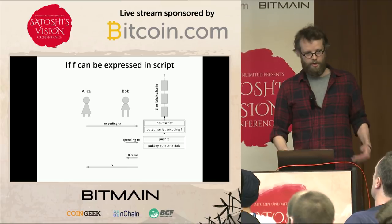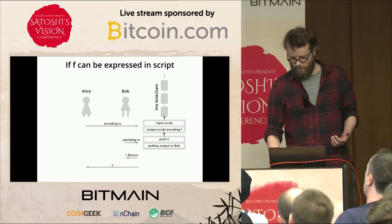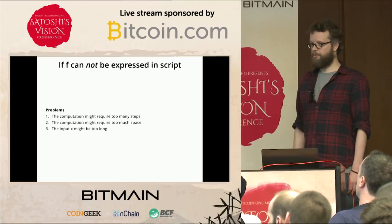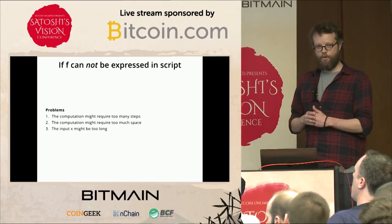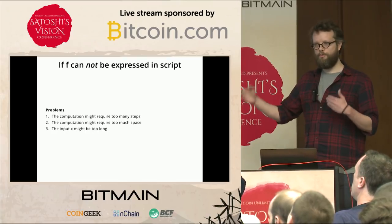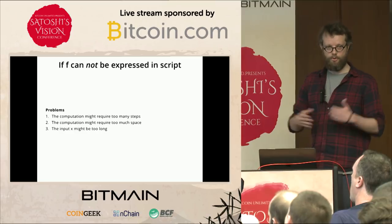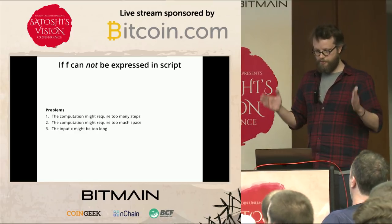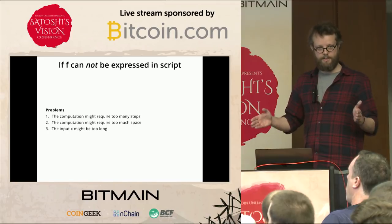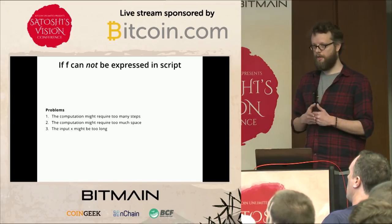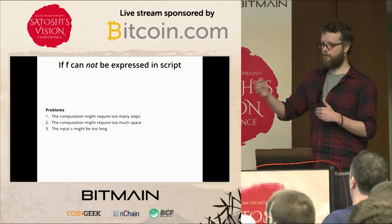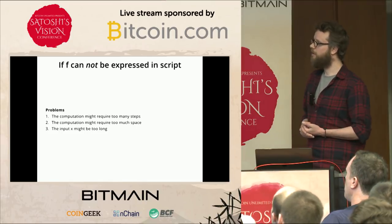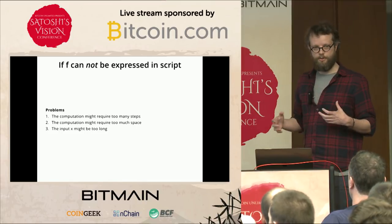Consider the case where f is a simple function that can be encoded directly in Bitcoin script. Alice broadcasts a transaction with an output script encoding that function f. Output scripts encode functions and input scripts plug parameters into them — you can spend an output if the parameters provided by the input evaluate the function to true. So Alice broadcasts that one transaction, and Bob finds that output.